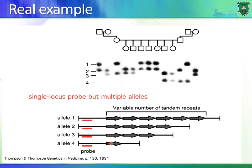By doing RFLP or PCR, we get the following patterns. The grandfather of the first family has allele number one and allele number two. The grandmother has allele number two and allele number three. You would expect their daughter to have one of these two from her father and one from her mother — and that's true: she has allele number one from her father and allele number three from her mother.